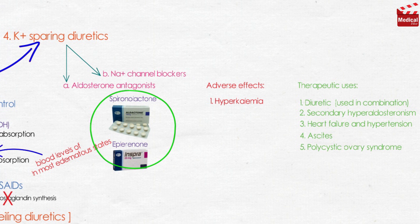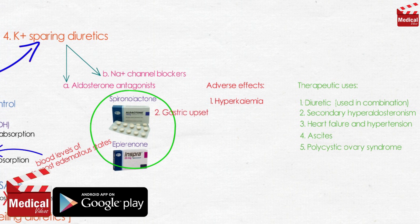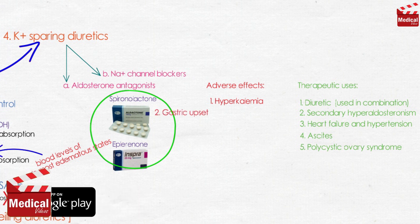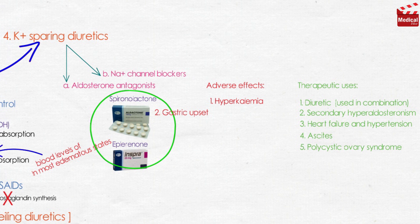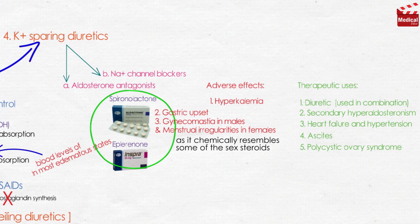Now let's talk about adverse effects. Hyperkalemia is a key concern. Spironolactone can cause gastric upset. It may also induce gynecomastia in male patients and menstrual irregularities in female patients, as it chemically resembles some of the sex steroids. Eplerenone has fewer endocrine effects than spironolactone.